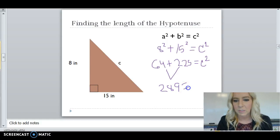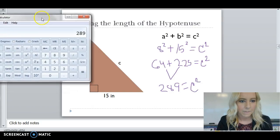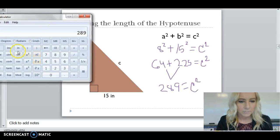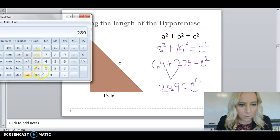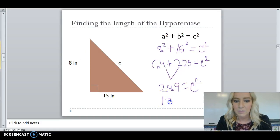Now, the inverse of squaring a number is taking the square root. So, I'm going to take the square root. So, the square root of 289 is 17. So, 17 is equal to C. So, 17 inches.